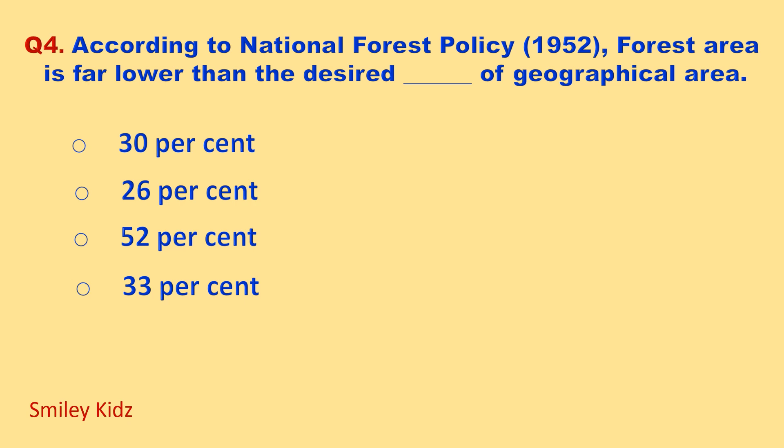According to the national forest policy in the year 1952, forest area is far lower than the desired percentage of geographical area. Your options are: 30 percent, 26 percent, 52 percent, 33 percent. Your time starts now.